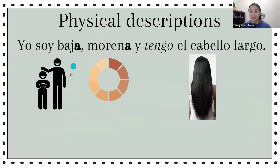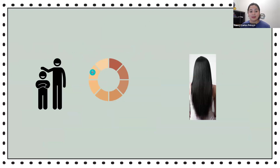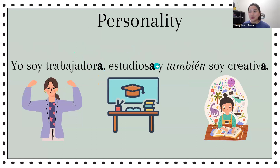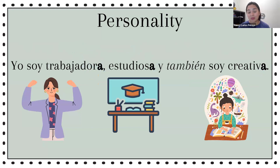If you notice, in these descriptions — yo soy baja, morena, trabajadora, estudiosa — they end in A. They end in A because I am describing myself and I'm a female. The descriptions and adjectives have to end in O or A. The adjectives have to agree with the noun. When I'm describing myself, my adjectives have to agree with my gender.